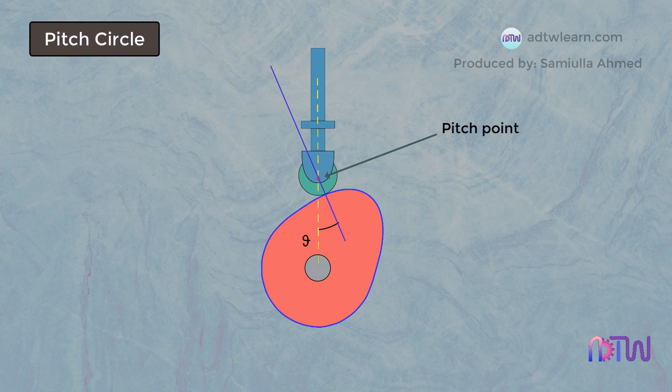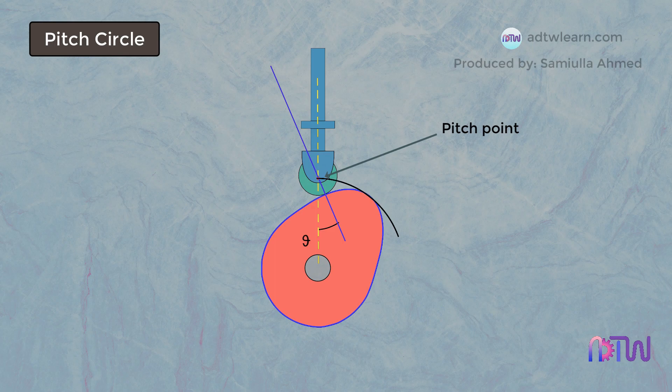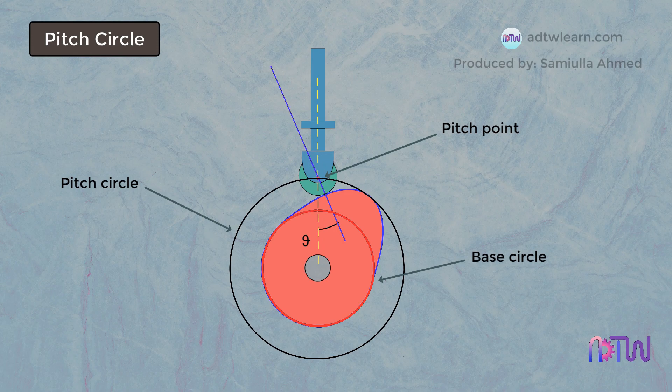Pitch Circle. A pitch circle is a circle which is passing through the pitch point and is concentric to the base circle, and the center of this pitch circle will be the center of the cam.